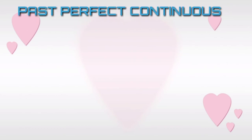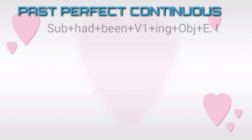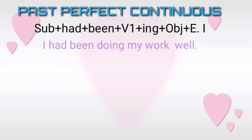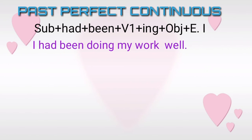The fourth one is past perfect continuous. What is the structure of past perfect continuous tense? Subject plus had plus been plus V1 plus -ing plus object plus extra information. Here, had will be used along with both singular and plural subjects. We will write one example: I had been doing my work well. Remember, had plus been plus V1 plus -ing denotes past perfect continuous tense.